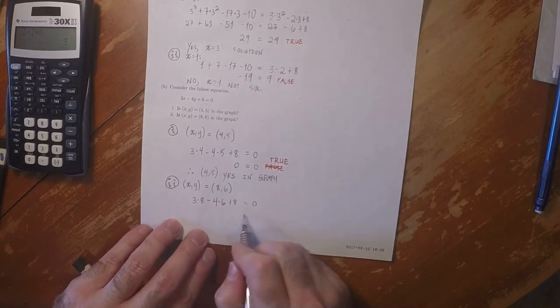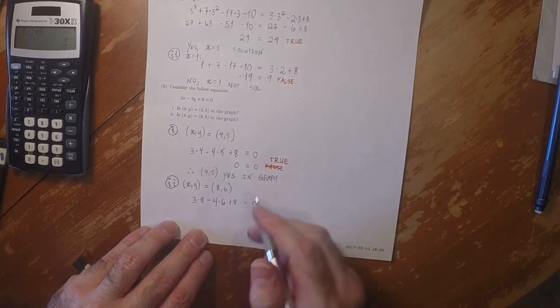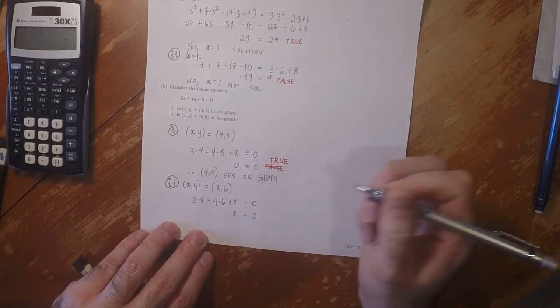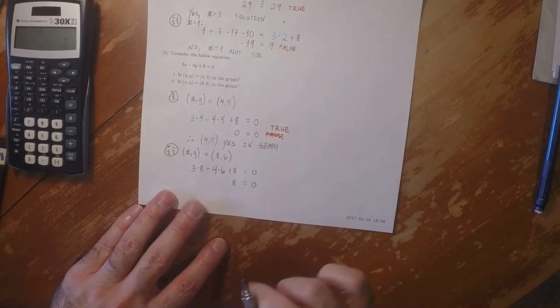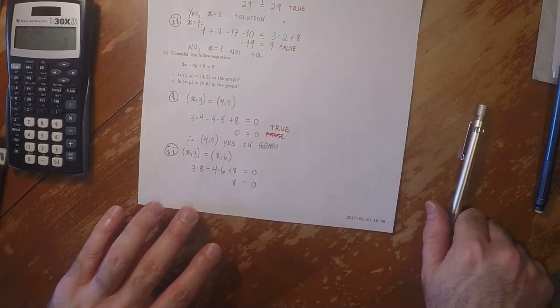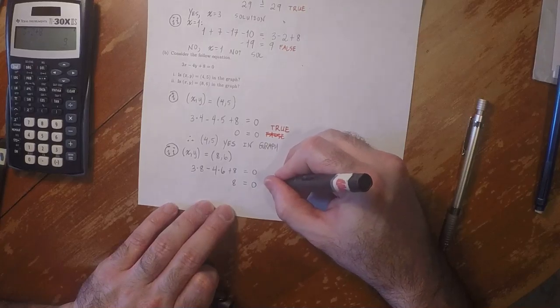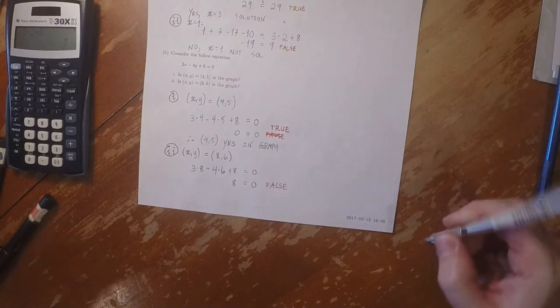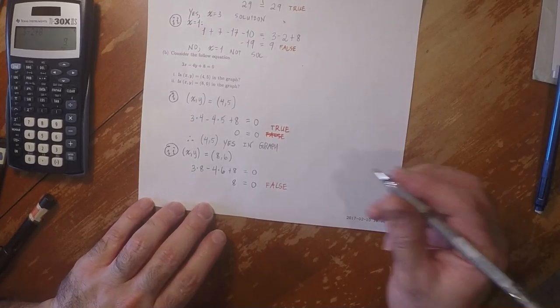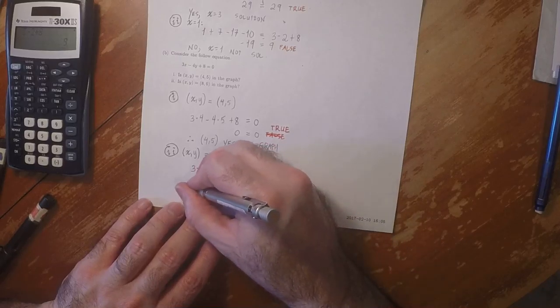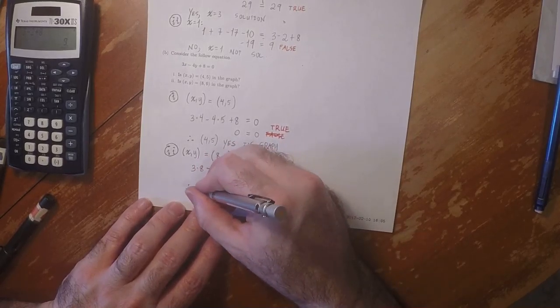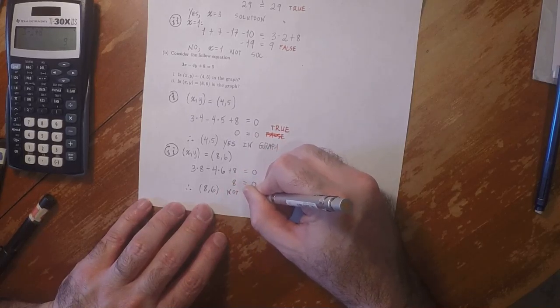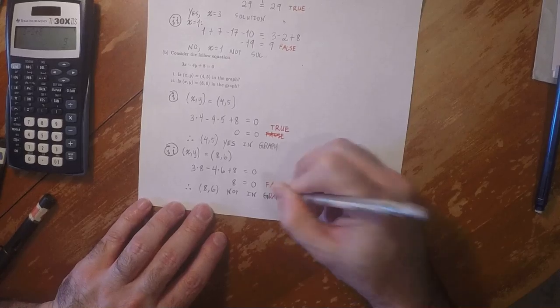So I knew I must have made an error because down here I could see that this arithmetic was also going to yield a false equation. So this is 8 equal to 0, 24 minus 24. So that's false. And therefore 8, 6 is not in the graph. Thank you.